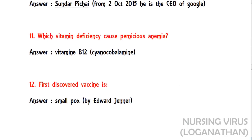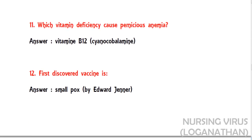The eleventh question: which vitamin deficiency causes pernicious anemia? The answer is Vitamin B12, also known as cyanocobalamin.